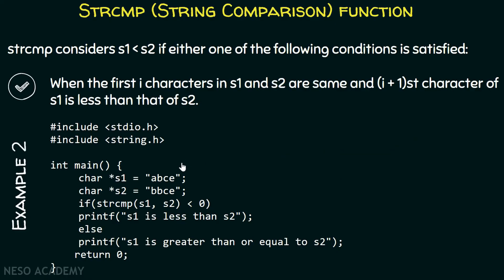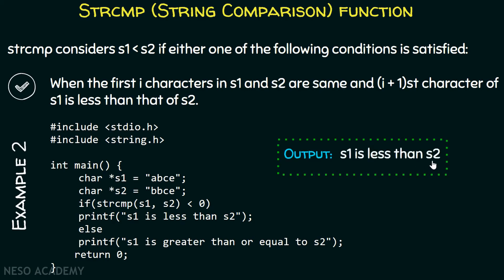In another example, s1 is 'abce' and s2 is 'bbce'. The first character itself does not match — a versus b. Since a is less than b, s1 is less than s2. strcmp returns an integer less than zero, and the output is again 's1 is less than s2'. We don't need to check the remaining characters.